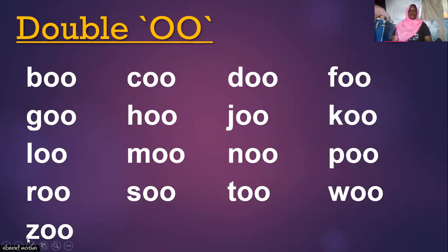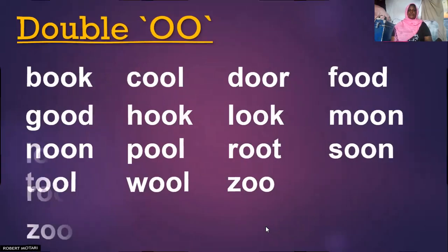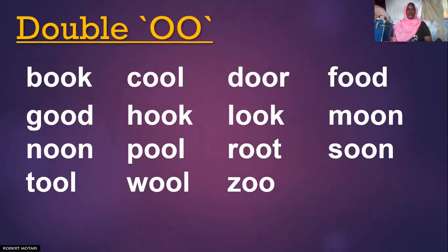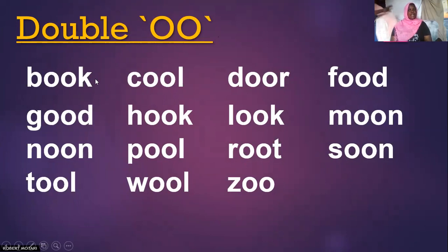We are going to read. These are the words of double O. Remember, double O sounds oo — don't forget. I start.